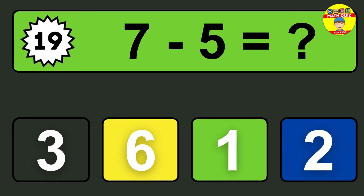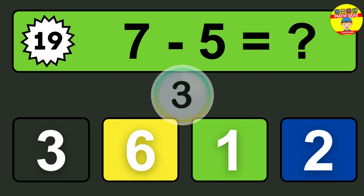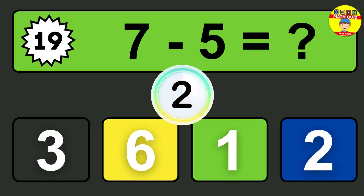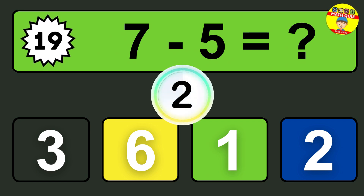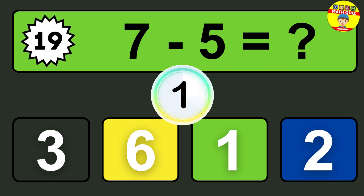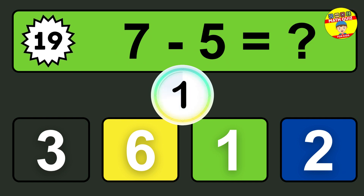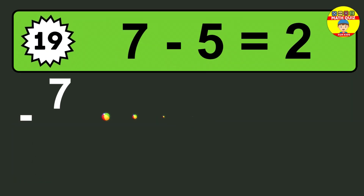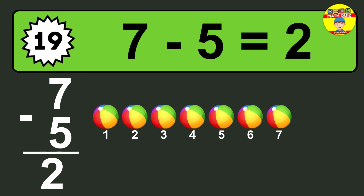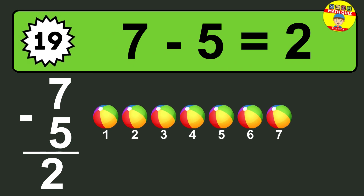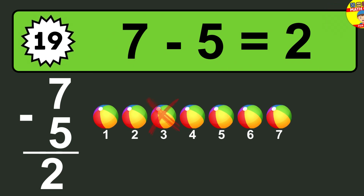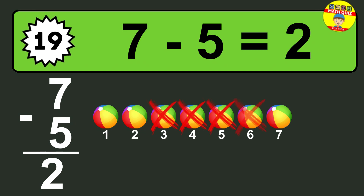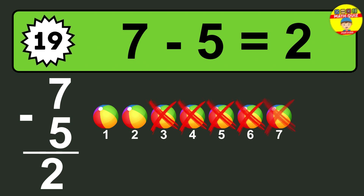Question nineteen: seven minus five equals what? So the answer is seven minus five is two. Let's count it. One, two.